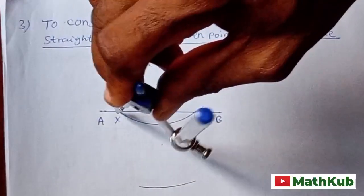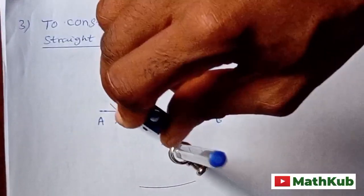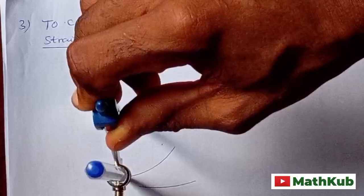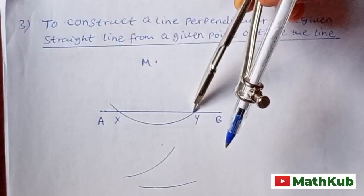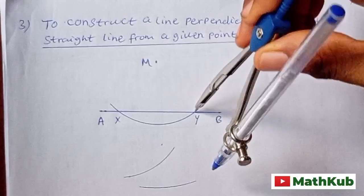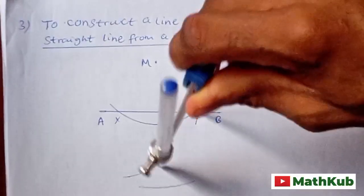And I'll make it obvious. You draw an arc. With center Y and that same radius, you cut that first arc.